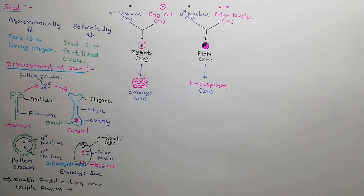Now what is triple fusion? In second fertilization, as we see that three nuclei are fused to form triploid PEN. This process is called triple fusion.